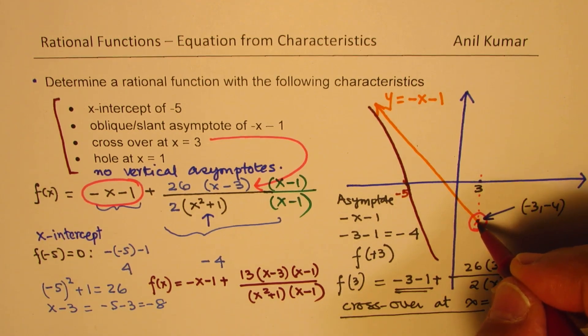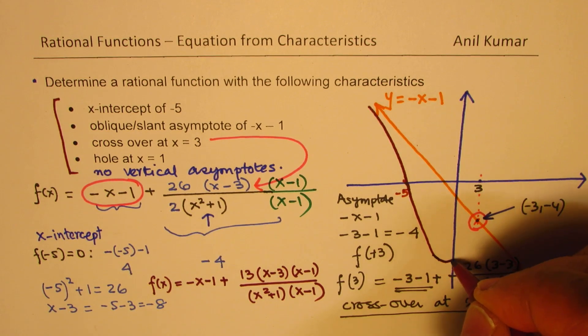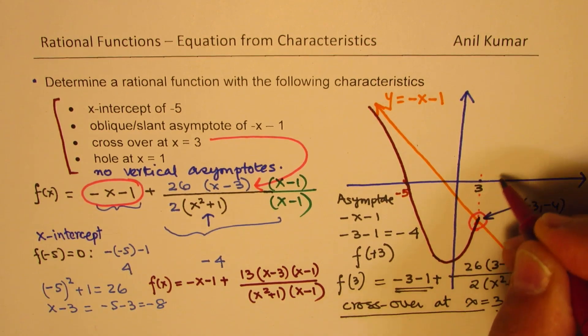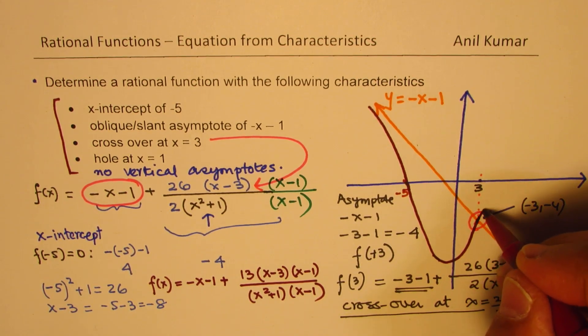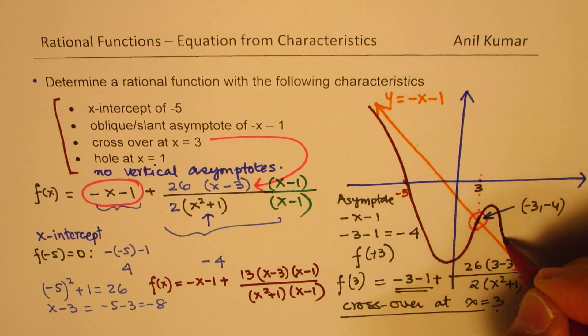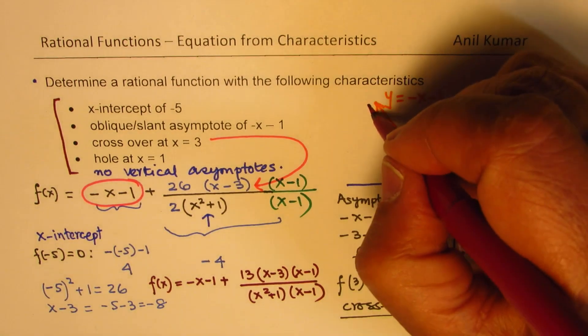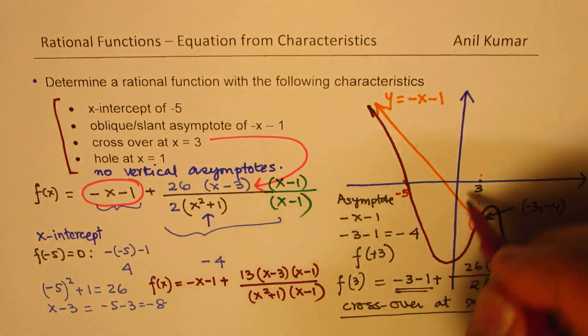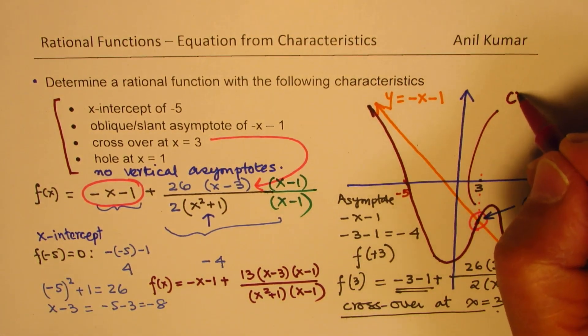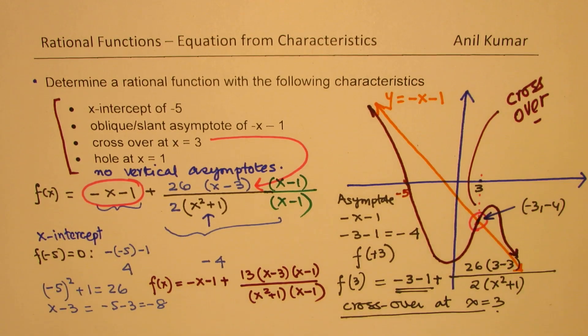Then it is going to shoot from here. Since it does not have any other intercept, it is going to turn back and go along this path. So we have oblique asymptote, and we have a crossover. Do you see that crossover?